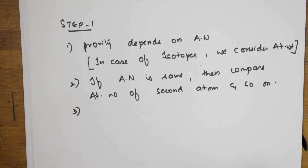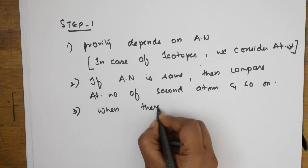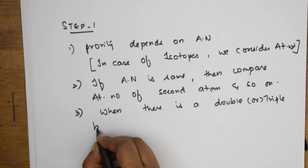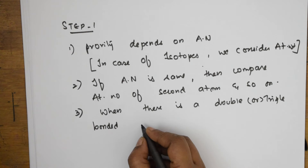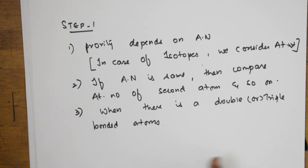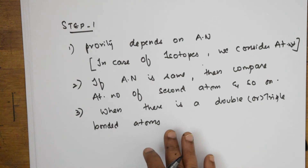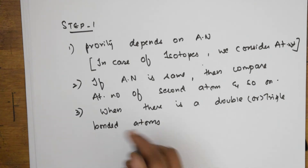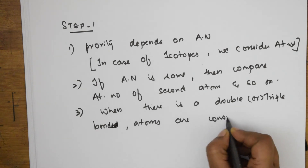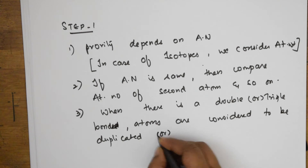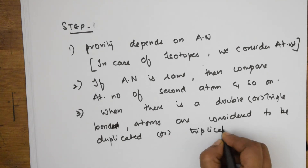Suppose there is a double bond or triple bond — let us see that condition as well. When there is a double or triple bond, the atoms are considered to be duplicated or triplicated respectively. So whenever there is a double bond, atoms are considered duplicated; whenever there is a triple bond, atoms are considered triplicated.